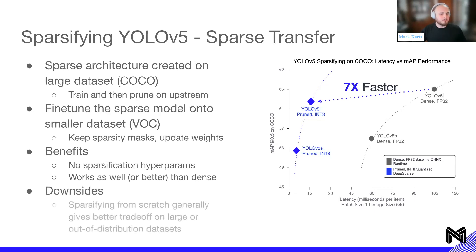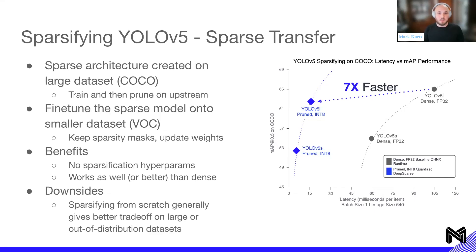The downside when comparing with sparsification from scratch: generally sparsification from scratch gives a better trade-off and more fine-grained control on large or out-of-distribution datasets. But if you're doing transfer learning right now, definitely move to sparse transfer — it's just as easy and you get all the performance speedups and the reduction in size.